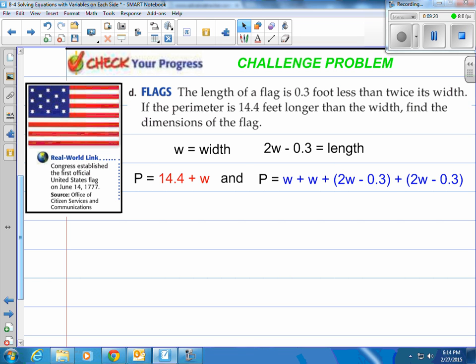Well, they said the perimeter is 14.4 feet longer than the width. So the perimeter is 14.4 feet longer than the width. So notice I've taken 14.4 plus W, and that's got to be the perimeter. And then I also know that the perimeter is the width, two widths and two lengths. So I've put in two widths and two lengths together there.